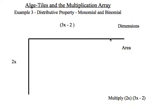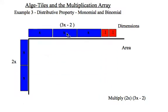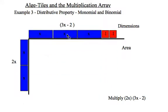My last example, a little bit larger. I'm going to multiply 2x times 3x minus 2. So I'll represent 2x with two blue algebra tiles on the side here. 3x minus 2, a little more involved. There's the 3x's. There's the negative 2 there.